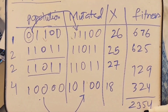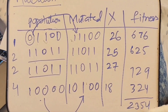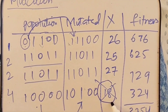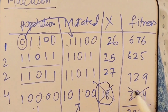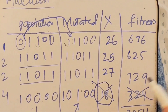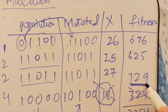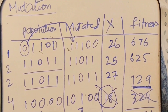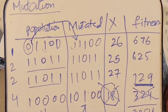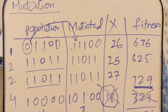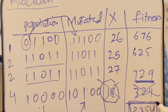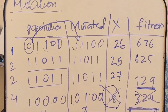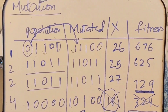Converting the mutated binary strings to decimal and calculating their fitness using f(x) = x², the sum of fitness scores comes out to 2354 — higher than the previous score of 1754. This confirms the genetic algorithm is continuing to move in the right direction. We can keep generating more generations, discarding the lowest-fitness string each time and repeating the highest. The question may specify how many generations to run or require you to show the final fitness score.